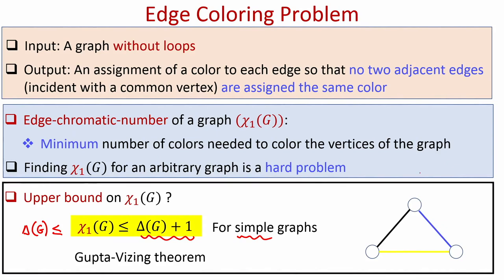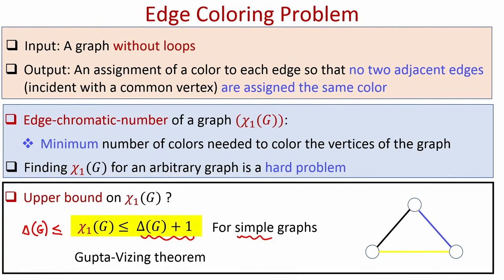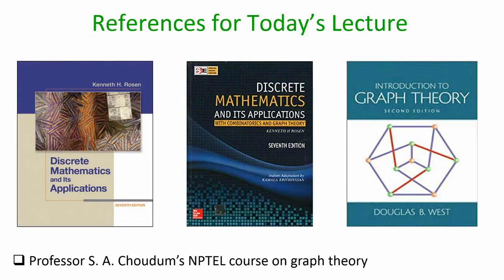To verify the Vizing theorem, consider a triangle graph, which needs 3 colors to color all its edges. The proof of the Vizing theorem is slightly advanced and will not be covered here, but interested students can refer to standard references. To summarize: in this lecture we introduced vertex coloring and edge coloring, the notion of vertex chromatic number χ₀ and edge chromatic number χ₁, the greedy algorithm for vertex coloring which may not always give optimal coloring, and various bounds for both chromatic numbers.